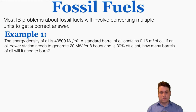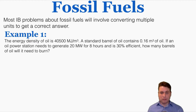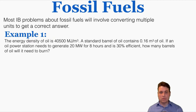In example number one, the energy density of oil is 40,500 megajoules per meter cubed. A standard barrel of oil contains 0.16 meters cubed. If an oil power station needs to generate 20 megawatts for eight hours and is 30% efficient, how many barrels of oil will it need to burn? We need to figure out how much energy we need to put into this power plant, then use that to find how many barrels of oil are required, since we have a way of converting from the amount of oil used to the amount of energy generated.